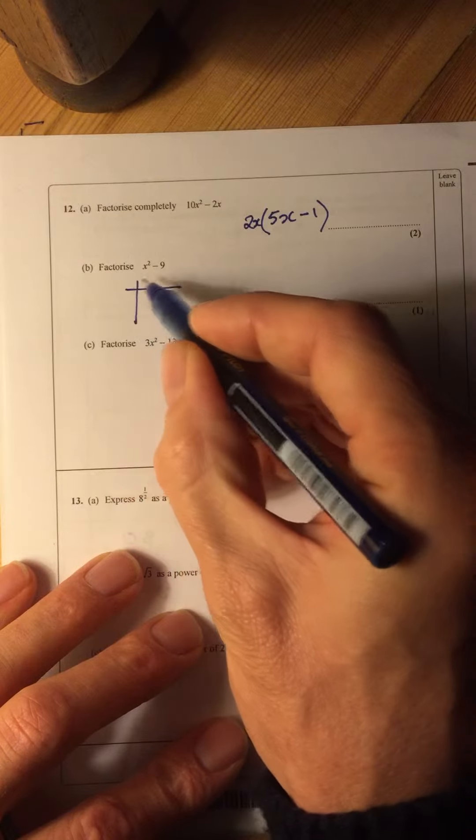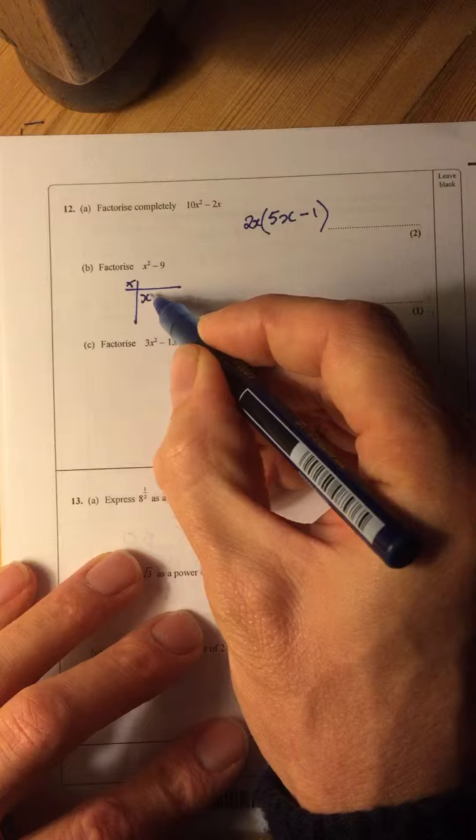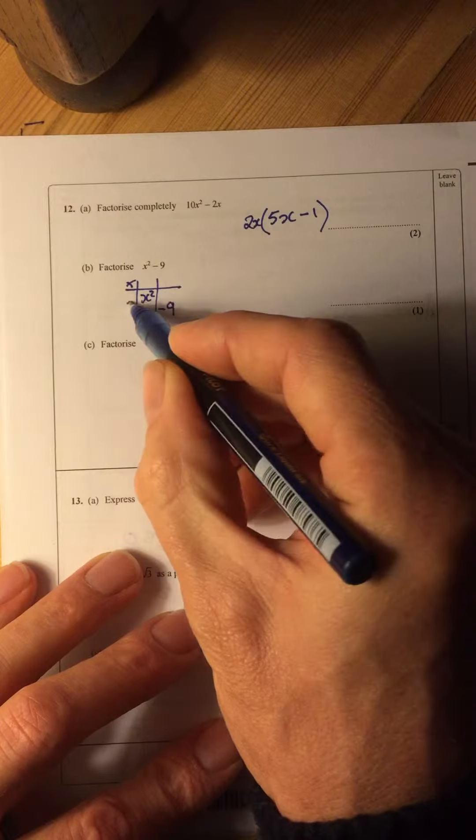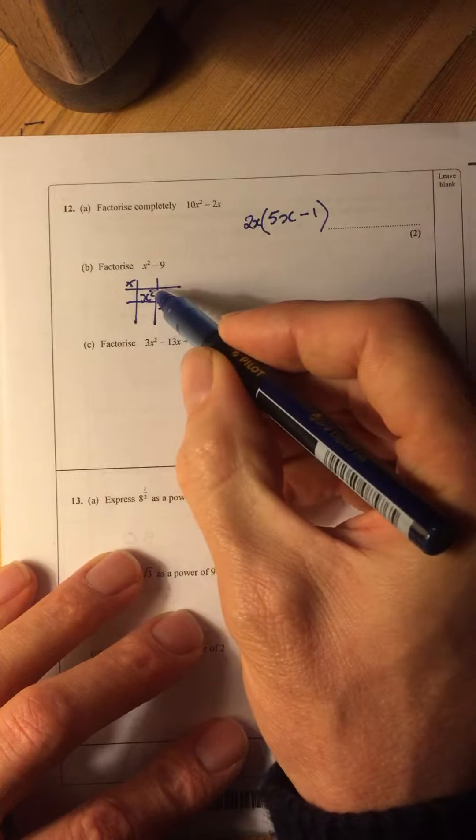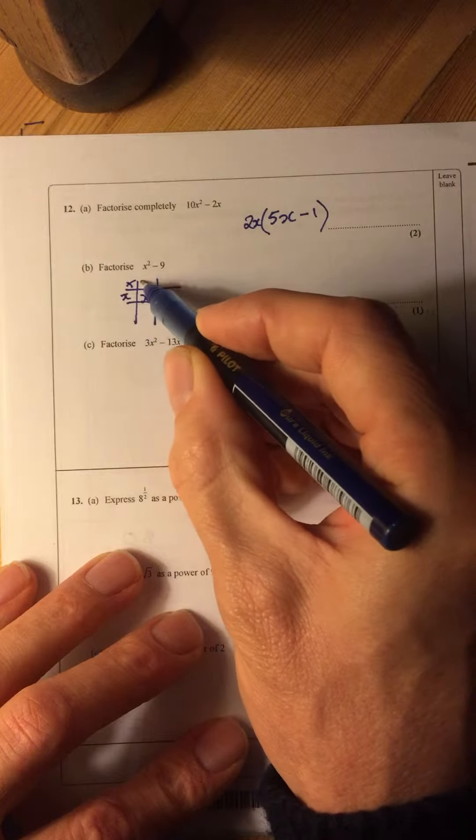And if I'm going to do it in the grid, we've got x squared, we've got minus 9. And x times x makes x squared.